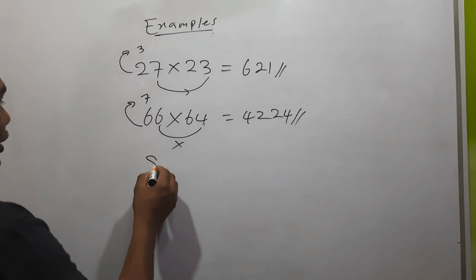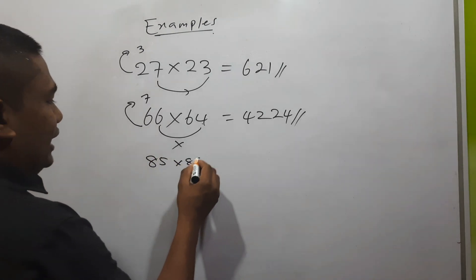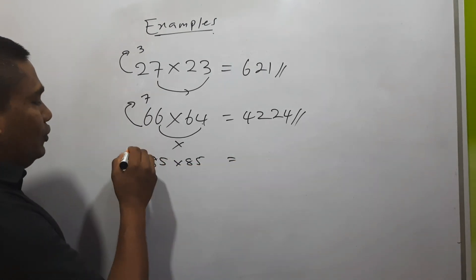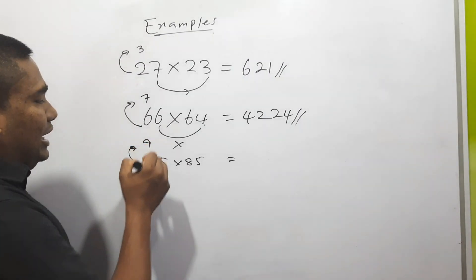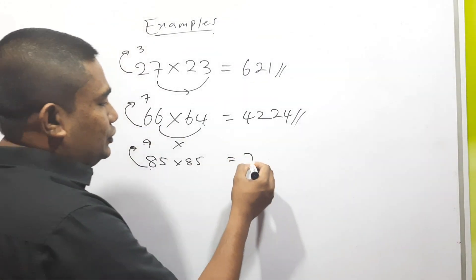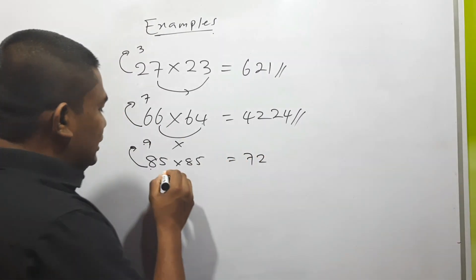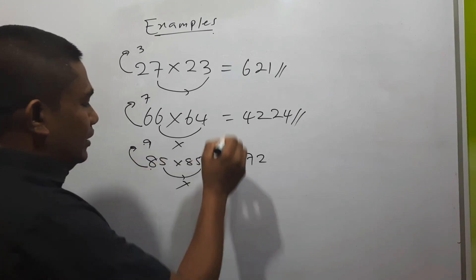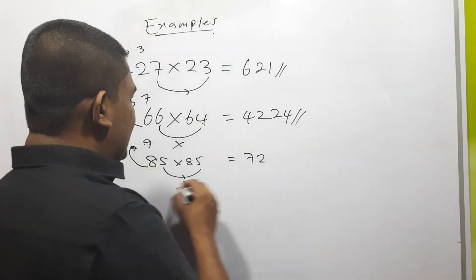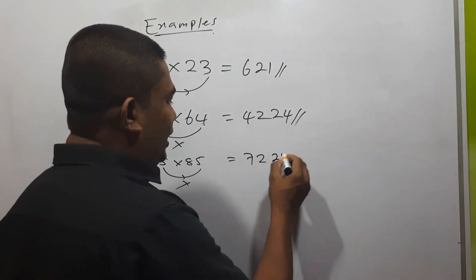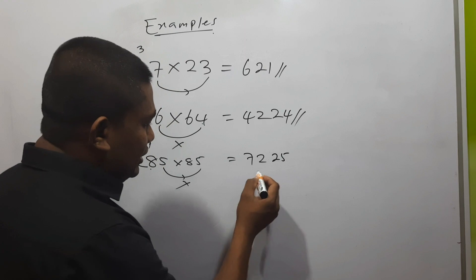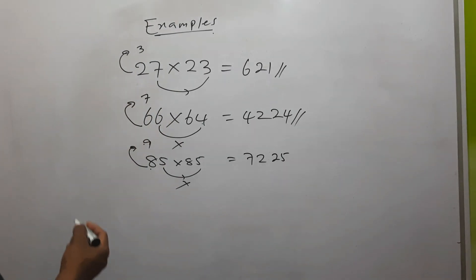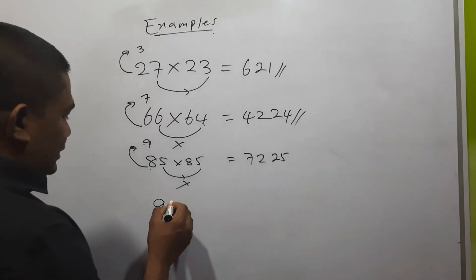Next example: 85 into 85. Add 1 — 8 plus 1 is 9. 8 into 9 is 72. Then simply multiply the unit place numbers: 5 into 5 is 25. Next example: 92 into 98.